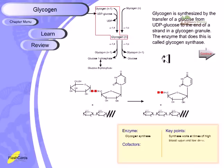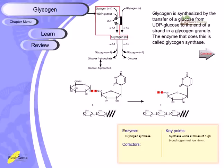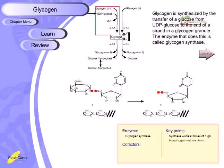Glycogen is synthesized by the transfer of glucose from UDP-glucose to the end of the growing glycogen strand. UDP is released and glucose is attached to the glycogen via an alpha-1,4 glucosidic linkage, with the help of the protein glycogenin forming the granular structure stored in the cytosol. The enzyme required for glycogen synthesis is called glycogen synthase, which works when blood sugar concentration is high.